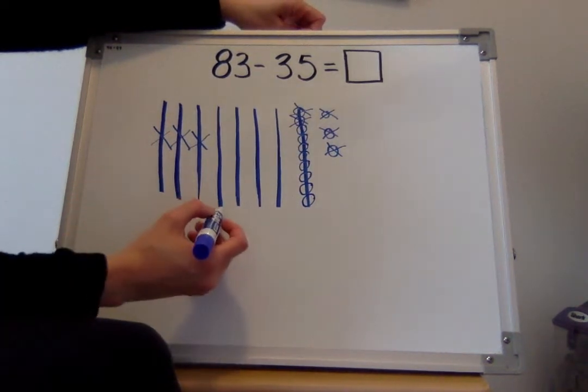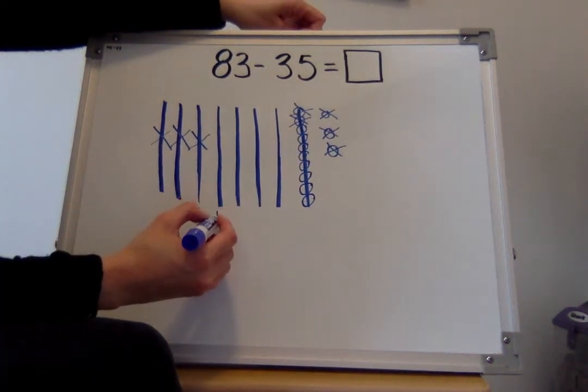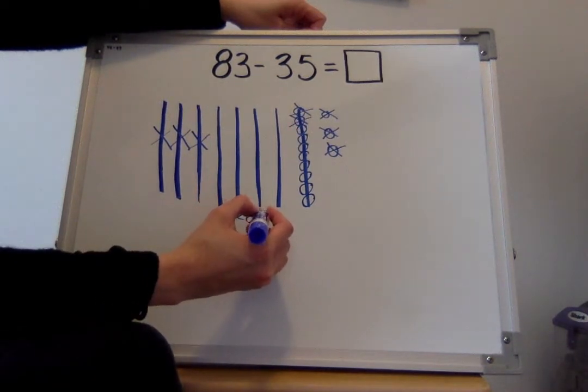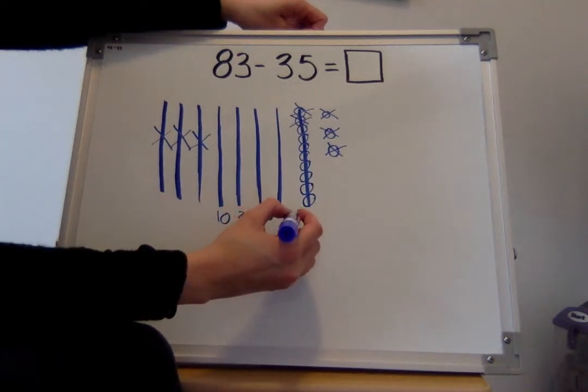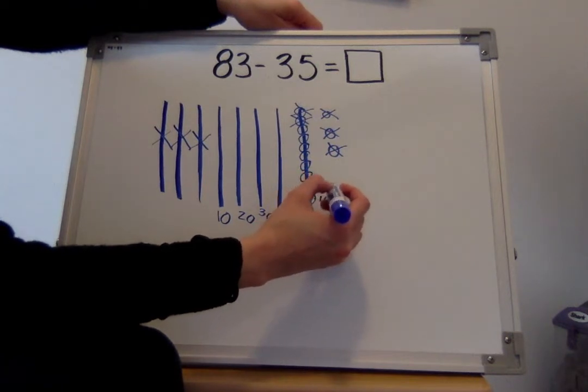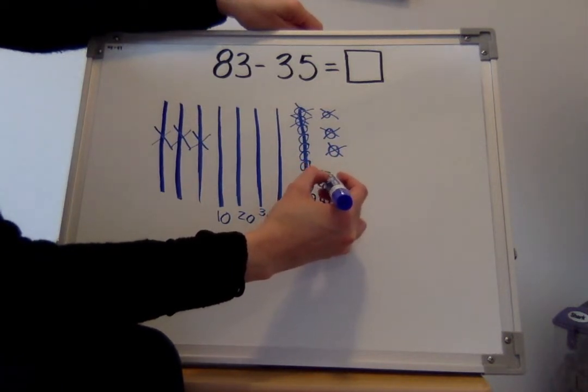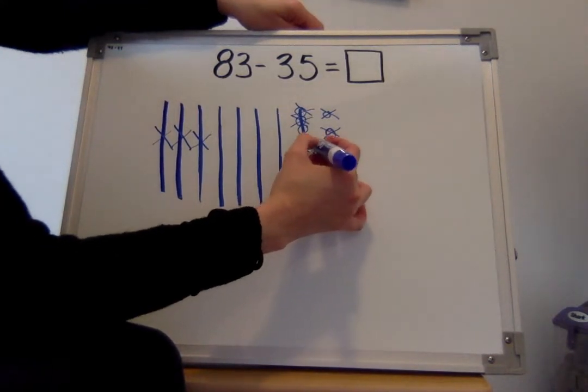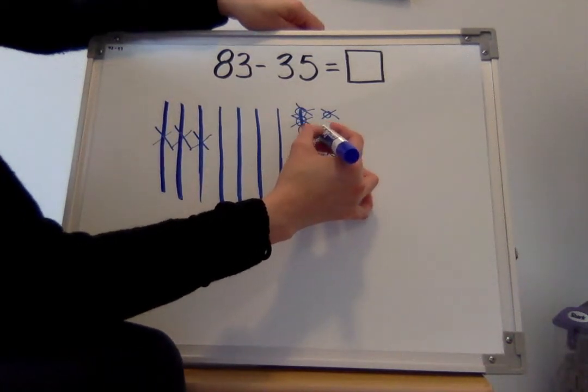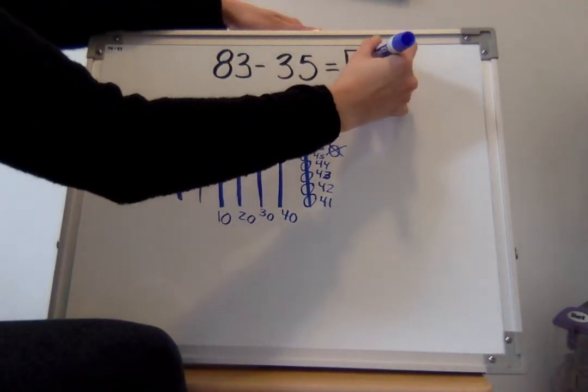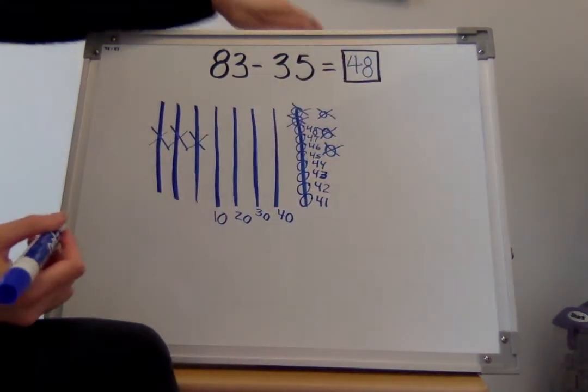Now we need to count how many is left. Count it. 10, 20, 30, 40. Count by 1's. 41, 42, 43, 44, 45, 46, 47, 48. How much does it equal? Nice.